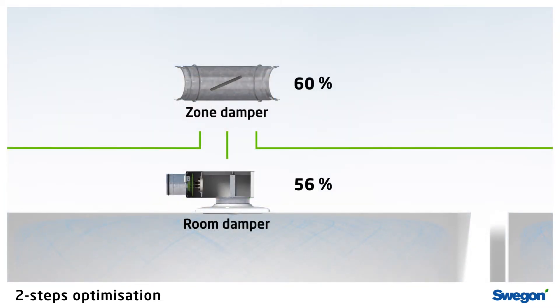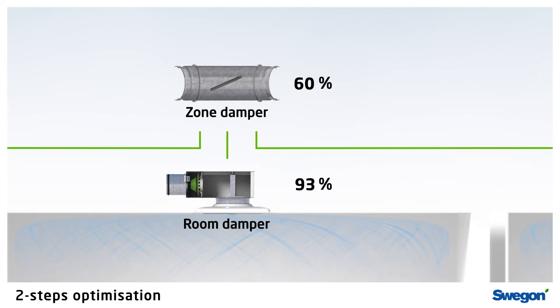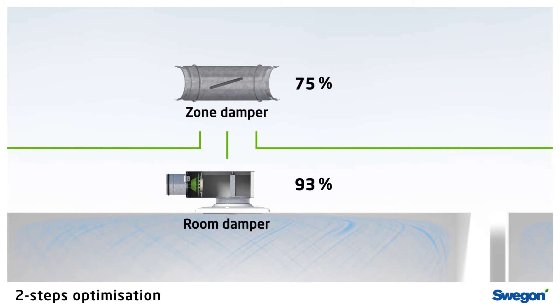When a room product opens its damper above 90% to provide the room with more air, the zone damper also opens. When less air is needed,